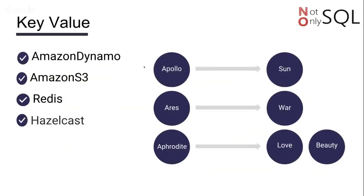The first one is key-value. We have several implementations of this kind. It looks like a HashMap or Map implementation from the Java world. Given a key, I can retrieve some information. For example, I have Apollo that returns the sun, and Aries, the war. So given a key, I can return the value.